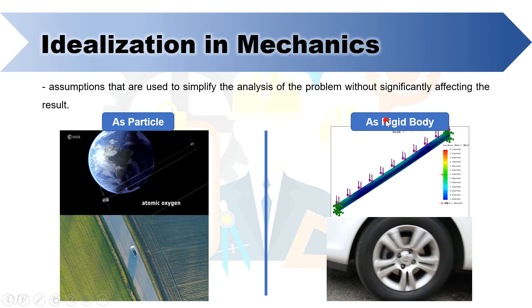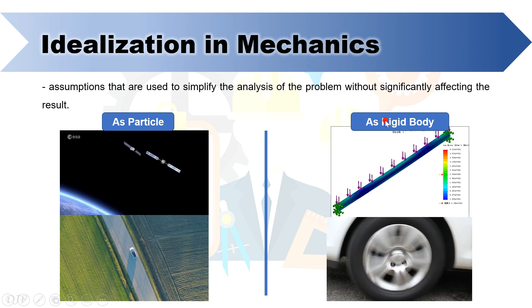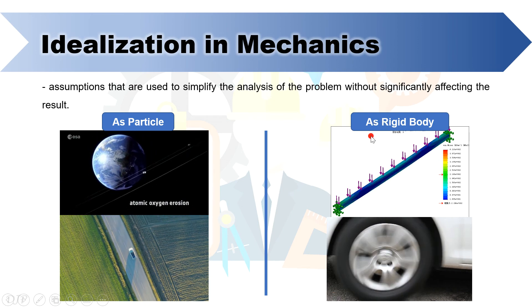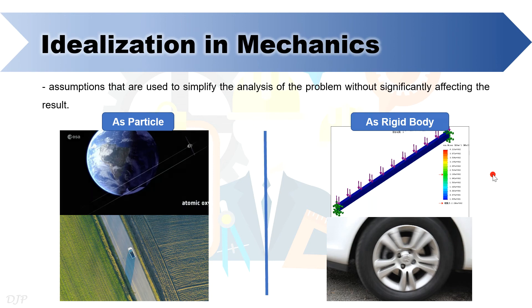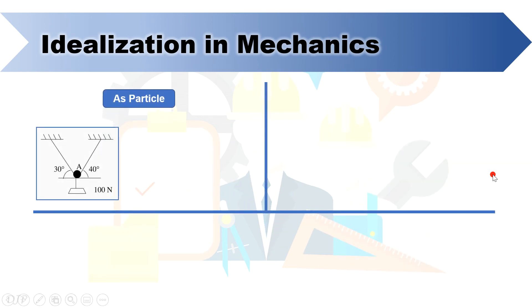To have some initial background right now on how these idealizations will be applied during problem solving, kindly take note of the following. You can see in this figure under object as particle. You can see that a 100N object is hung with the use of cable wires and pulley. In this case, you can idealize the pulley as a particle by drawing it like a dot at point A and then drawing the applied forces on the particle.